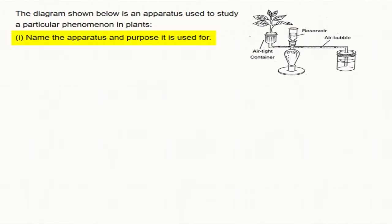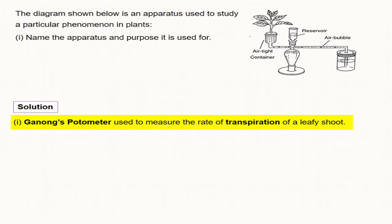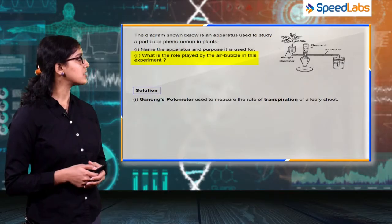The first question from this diagram is: name the apparatus and the purpose it is used for. The name of this apparatus is Ganong's Potometer, and this potometer is used to measure the rate of transpiration from the plant.